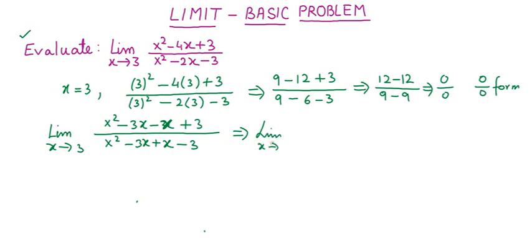In the numerator, take x common from the first two terms to get x(x-3), then take -1 common from the last two terms to get (x-3). This gives (x-3)(x-1). In the denominator, take x common to get x(x-3), then take 1 common to get (x-3), giving (x-3)(x+1).